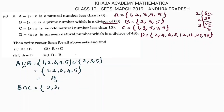Next, B intersection C. Set B is {2, 3, 5} and set C is {1, 3, 5, 7, 9}. The intersection operation gives us all the common elements in both B and C. The common elements are 3 and 5, so B intersection C is {3, 5}.